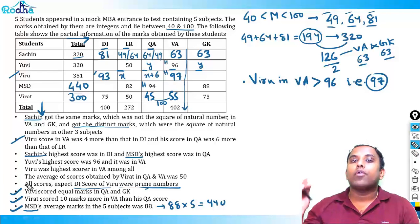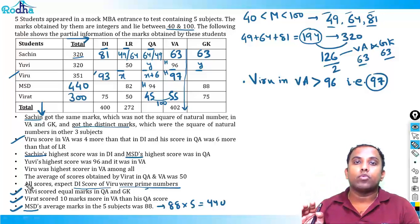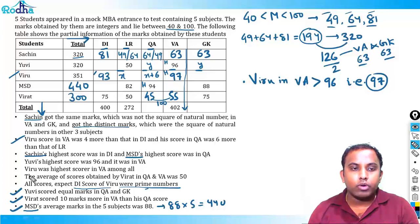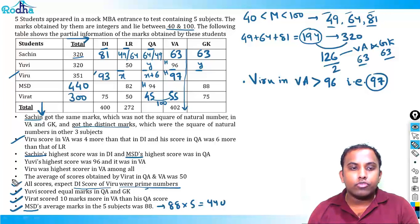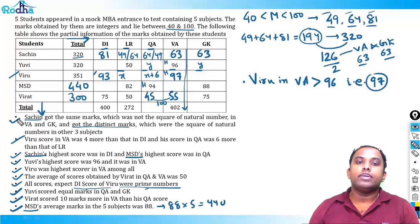While solving puzzles, reading conditions once or twice should be sufficient. Reviewing: Virat's QA–VA average done; Viru's highest VA done; UV's VA = 96 done; Sachin's highest in DI done. Now we consolidate and fill remaining blanks.